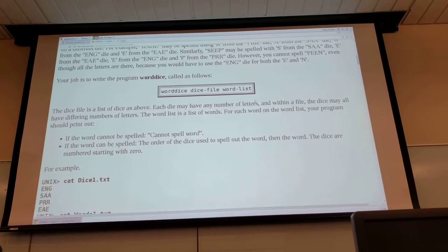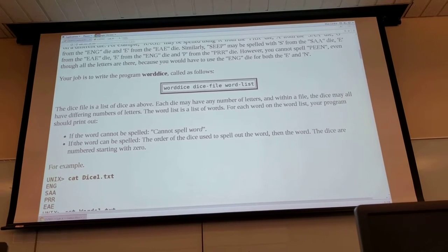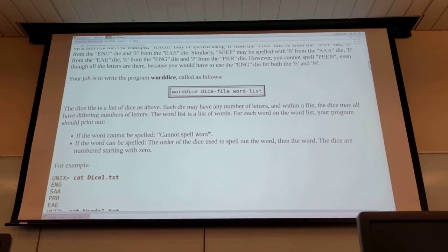For each of the words in the word list your program should print out whether or not it can be spelled. So if the word can't be spelled you'll print out cannot spell word and then you'll put the word that you can't spell.